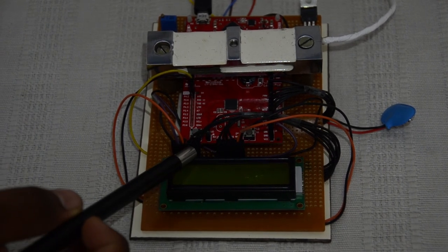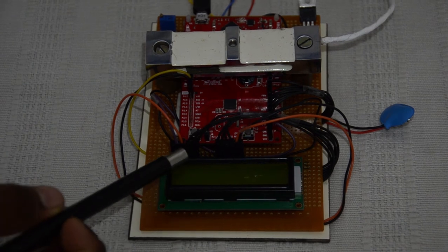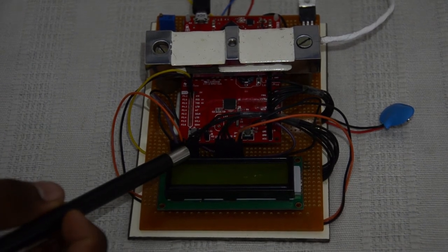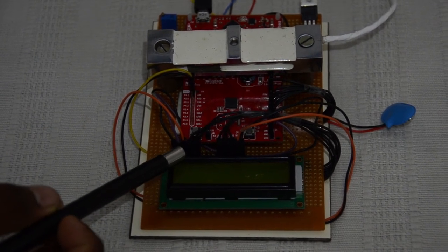These are the data lines. Here we have the enable port, read/write port, and register select. This is for the VEE, this is VDD, and this is VSS.